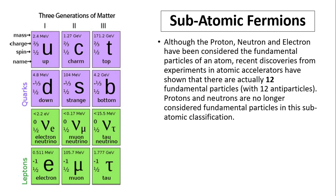Subatomic fermions. All particles are either matter particles or force particles. Today we're going to concentrate on matter particles. Matter particles are made of quarks. There are six quarks and six leptons. Although proton, neutron, and electron have been considered fundamental particles of an atom, recent discoveries from experiments in atomic accelerators have shown that there are actually 12 fundamental particles with 12 antiparticles. Protons and neutrons are no longer considered fundamental particles in this subatomic classification.